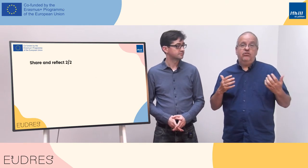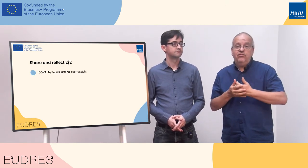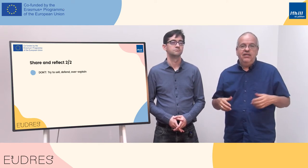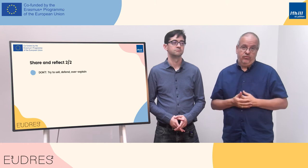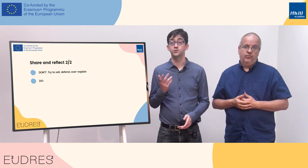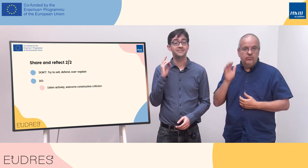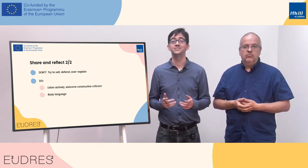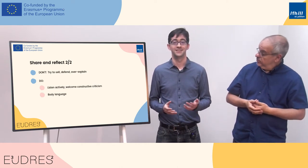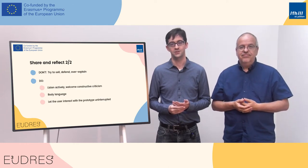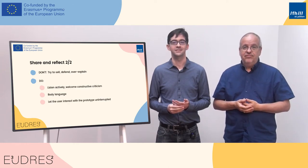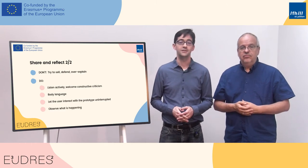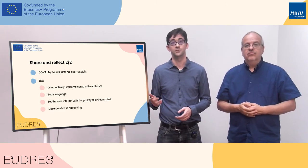What you must not do: don't try to sell your idea, don't defend it, and don't over-explain how the prototype works. What you should do: listen actively and welcome constructive criticism, pay attention to body language. While collecting feedback, make sure that you are not disrupting the user's interaction with the prototype. Find a way to collect feedback that allows you to observe what's happening.